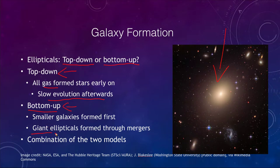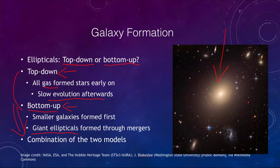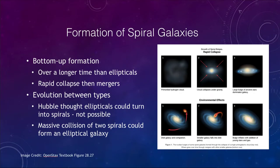When we look at distant, very old galaxies, we see that they tended to be a lot smaller. So it could be either of these two models, or it could be a combination of the two that actually explains how galaxies might have formed.